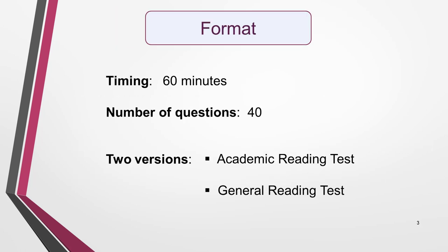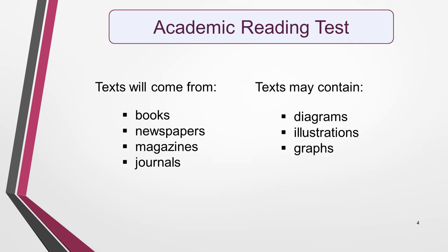First, the format of the test. The reading test lasts for 60 minutes and contains 40 questions. There are two versions: academic and general. The difference between them is in the length and type of texts, but each has three sections. Usually, the first section will be the easiest and the last one the hardest. The three sections of the academic reading test each contain one long text taken from real publications such as books, newspapers, magazines, and journals. The text will be of general interest and for some question types may contain non-verbal material such as diagrams, illustrations, and graphs. The text will have been written for a non-specialist audience, but a glossary will be provided if they contain technical terms.